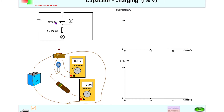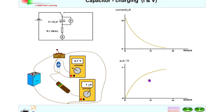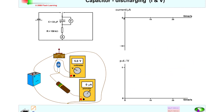Using a capacitor of 33 microfarads and a resistor of 150 kilohms, hitting play shows the voltmeter and ammeter readings changing on the graph — current decreasing over time from a maximum value, and voltage across the capacitor increasing from zero. For the discharging case, there are negative ammeter readings: current decreases to zero from a maximum negative value, and the voltage across the capacitor decreases over time.